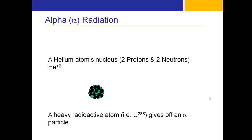Now let's get into alpha radiation. A helium atom's nucleus — two protons and two neutrons — is a positively charged particle, He²⁺. That is an alpha particle. Heavy radioactive atoms such as uranium-238 will give off that alpha particle.